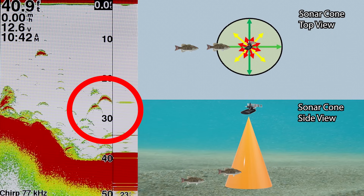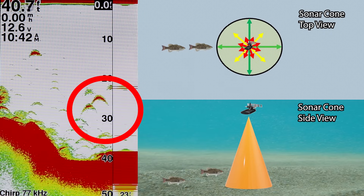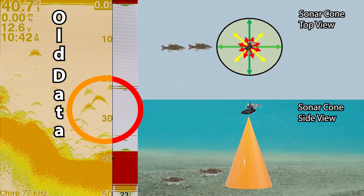The second fish is beginning to exit the transducer cone and has now completely exited. At this point, neither fish is within the cone of our transducer. Even though the fish are still showing up on our sonar screen, they are no longer within the radius underneath the boat covered by the transducer cone — the fish are located somewhere outside of that cone now.